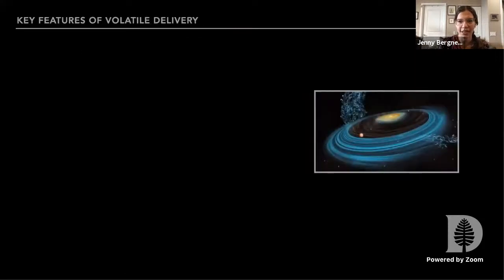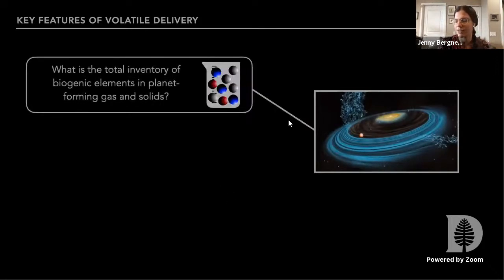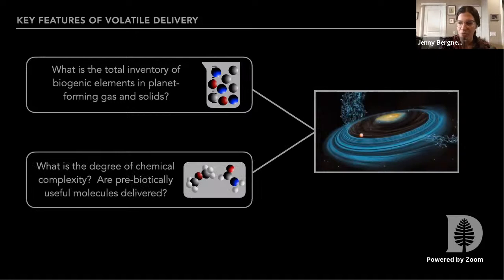There are two key features of volatile delivery that we're interested in. The first is the total inventory of biogenic elements in planet-forming gas and solids — how much raw material is delivered, without thinking too much about the form it's delivered in. The other approach asks what degree of chemical complexity these ingredients are delivered in, and whether they end up on planets as a prebiotically useful molecule that could jump-start the chemistry.